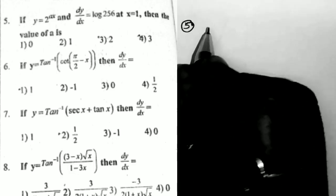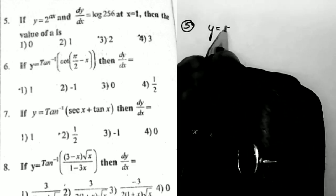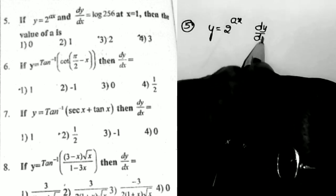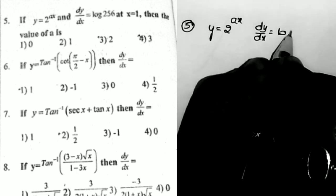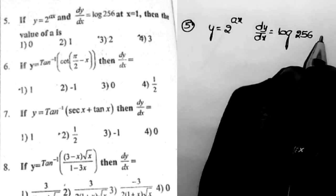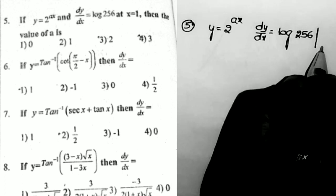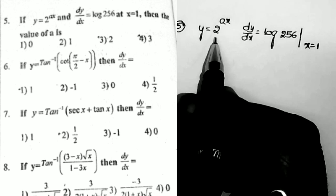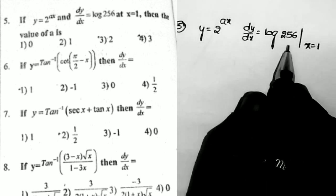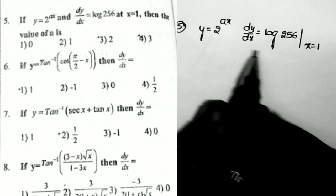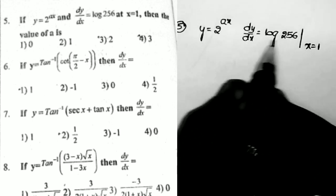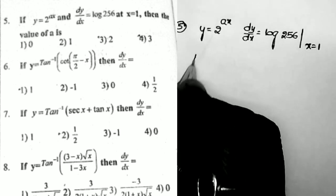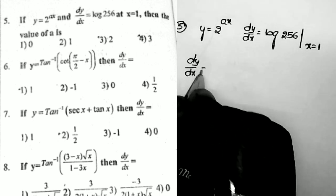Sum number 5: if y = 2^(ax) and the value of dy/dx equals log 256 at x = 1, then what is the value of a? That is the given question. Given y = 2^(ax) and dy/dx = log 256 at x = 1, we first need to find dy/dx.